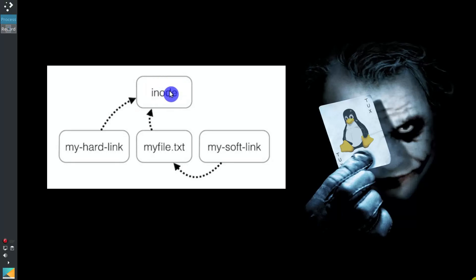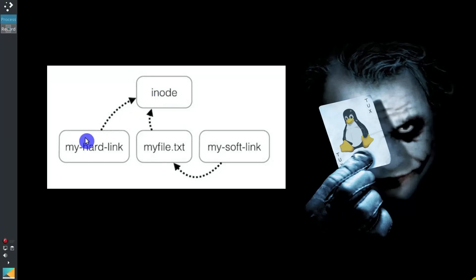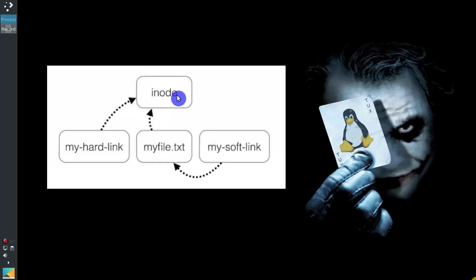So when you create a hard link, you create a link directly to the iNode. You may have many different hard links. When you have a file on your system, it is also a hard link to that iNode. You can have as many hard links as you want, but if you remove all hard links — when there is no hard link linked to this iNode — the iNode will also be removed.